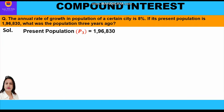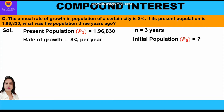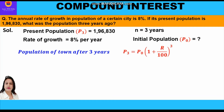Now let's start with the solution. Present population, that is population after three years, is 196,830. Rate of growth is 8% per year. Time period is three years, and we have to find the initial population three years ago. Population after three years is given by: P₃ = P₀ × (1 + r/100)³, since the time period is three years.